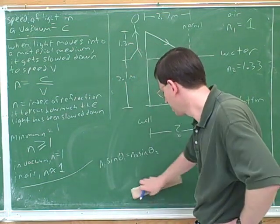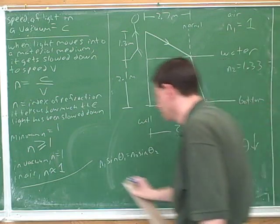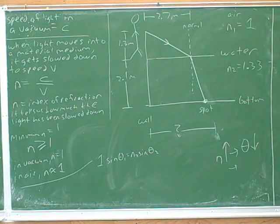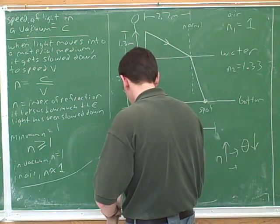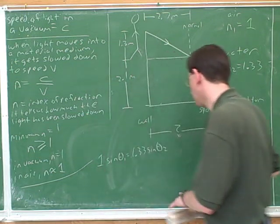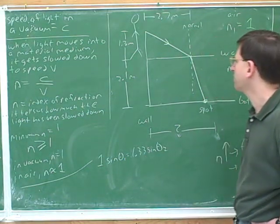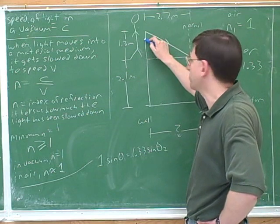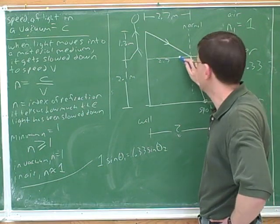We have n1 sine θ1 equals n2 sine θ2. We can plug in 1 for n1 and 1.33 for n2, but we can't get any traction until we know one more angle. The key thing to notice is that this is really a geometry problem. We know that one side of the triangle is 1.3 and the other side is 2.7, so we can use geometry to find this angle — let's call it alpha.